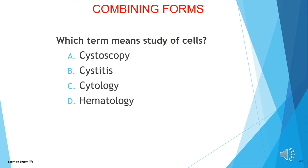Quiz time again. Which term means study of cells? A) cystoscopy, B) cystitis, C) cytology, or D) hematology? The answer is C, cytology. Cyto- means cell, and -logy means studying of.